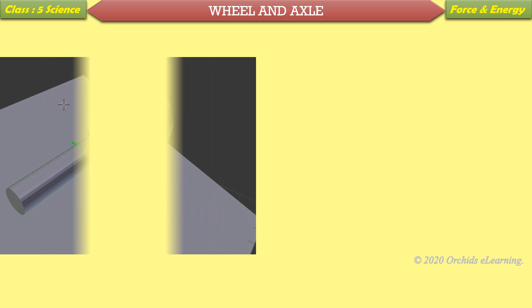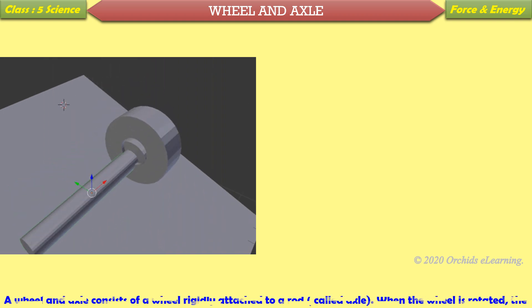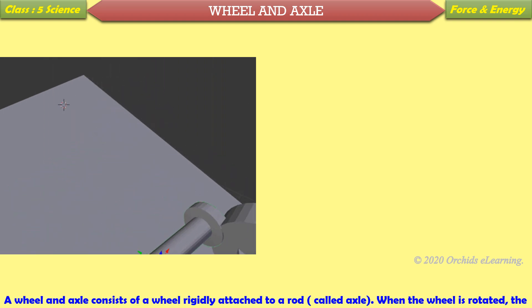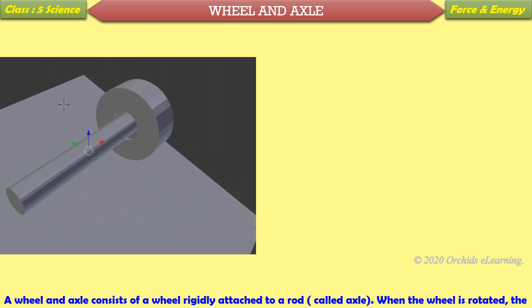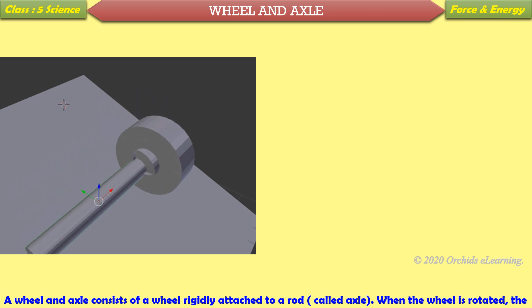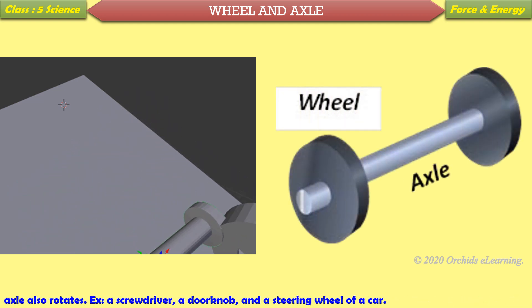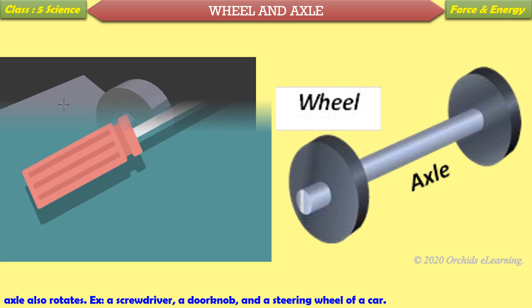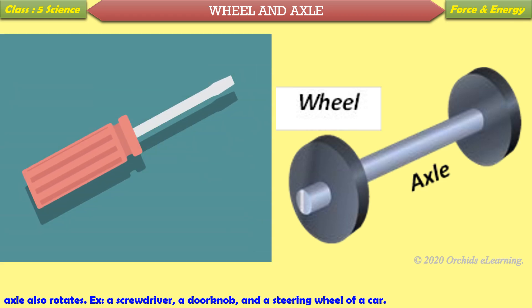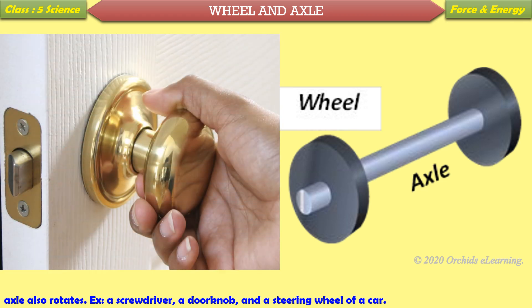Wheel and axle: A wheel and axle consist of a wheel rigidly attached to a rod called the axle. When the wheel is rotated, the axle also rotates. Examples: a screwdriver, a doorknob, and a steering wheel of a car.